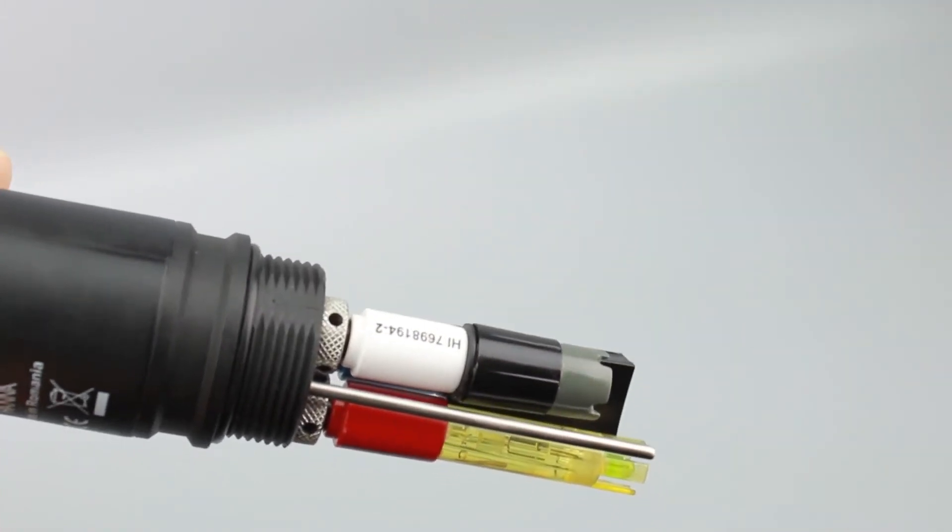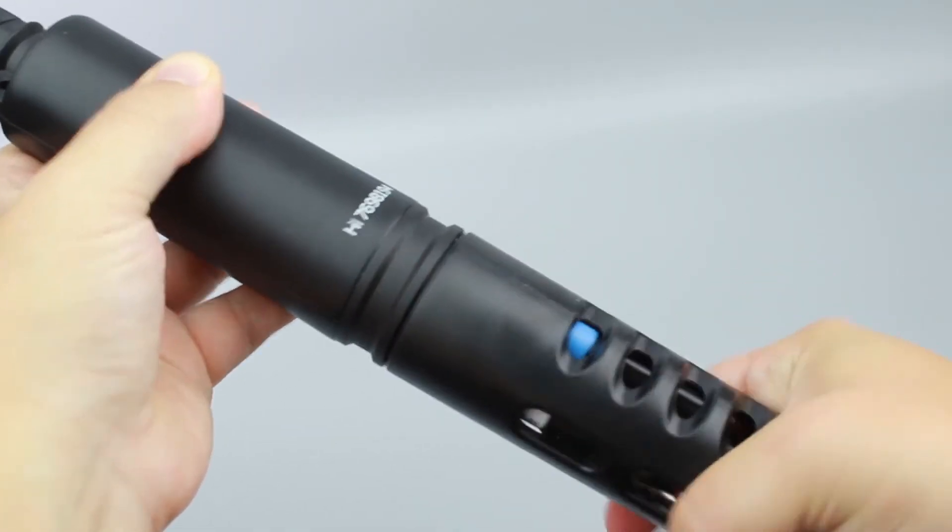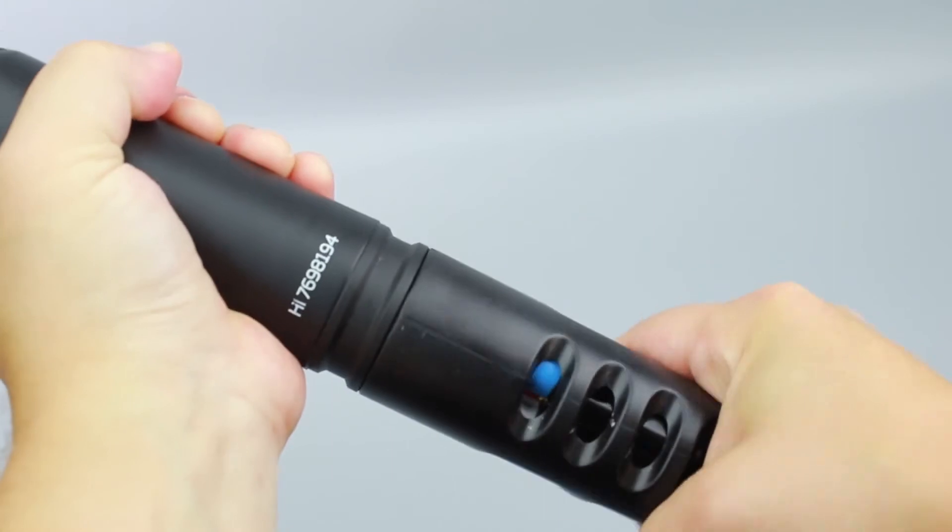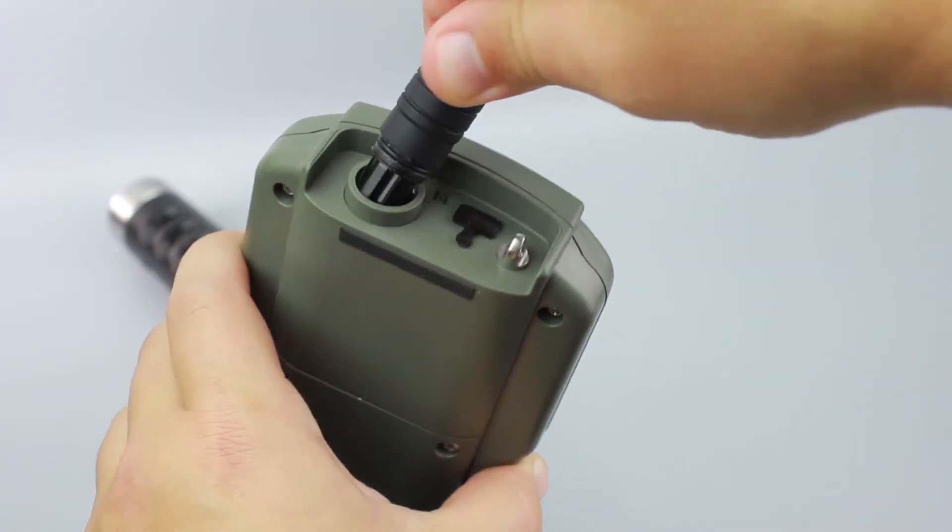Once complete, screw the protective shield onto the probe body. This will help protect the sensors. With the meter off, connect the probe to the input on the top of the meter.